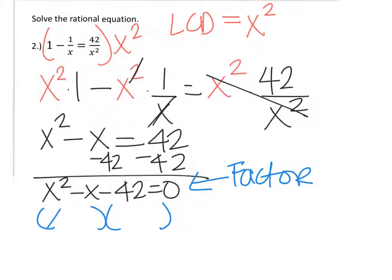I'm going to start with x and x because x times x equals x squared. And so my two numbers are going to be negative 7 and positive 6. I'm going to set that equal to 0 and set each factor equal to 0.